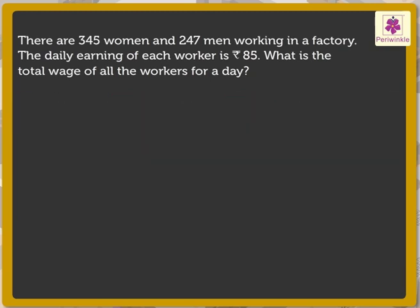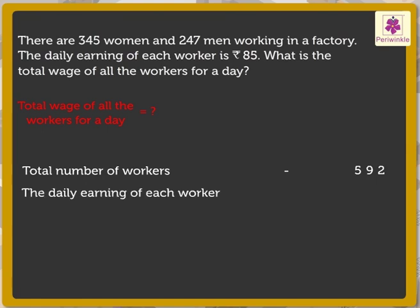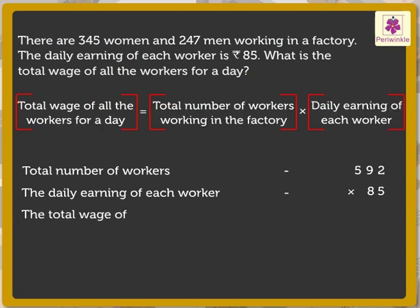Now we have to find out the total wage of all workers for a day. We know that the total number of workers is 592 and the daily earning of each worker is 85 rupees. So here we will be multiplying the total number of workers by the daily earning of each worker.